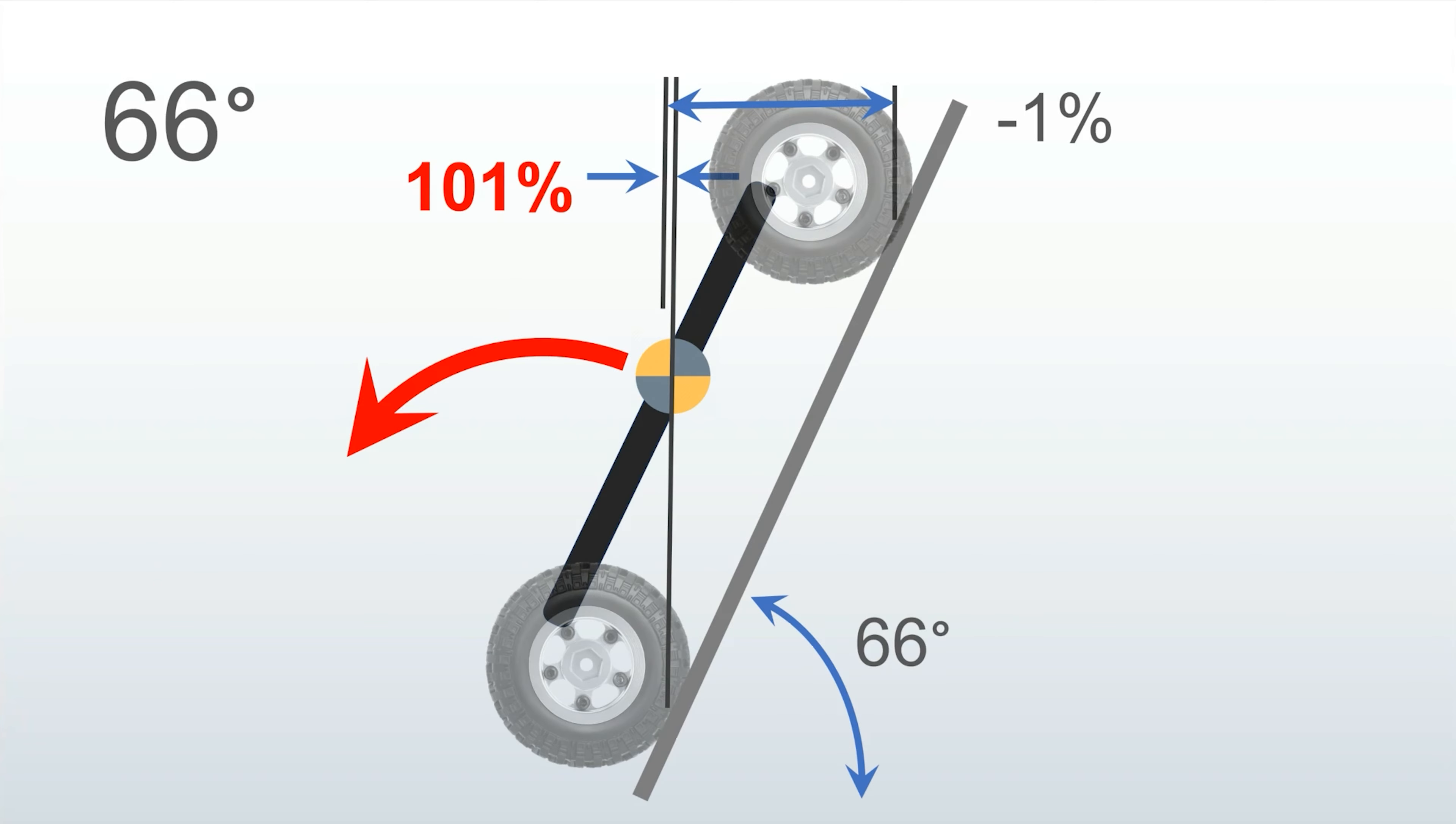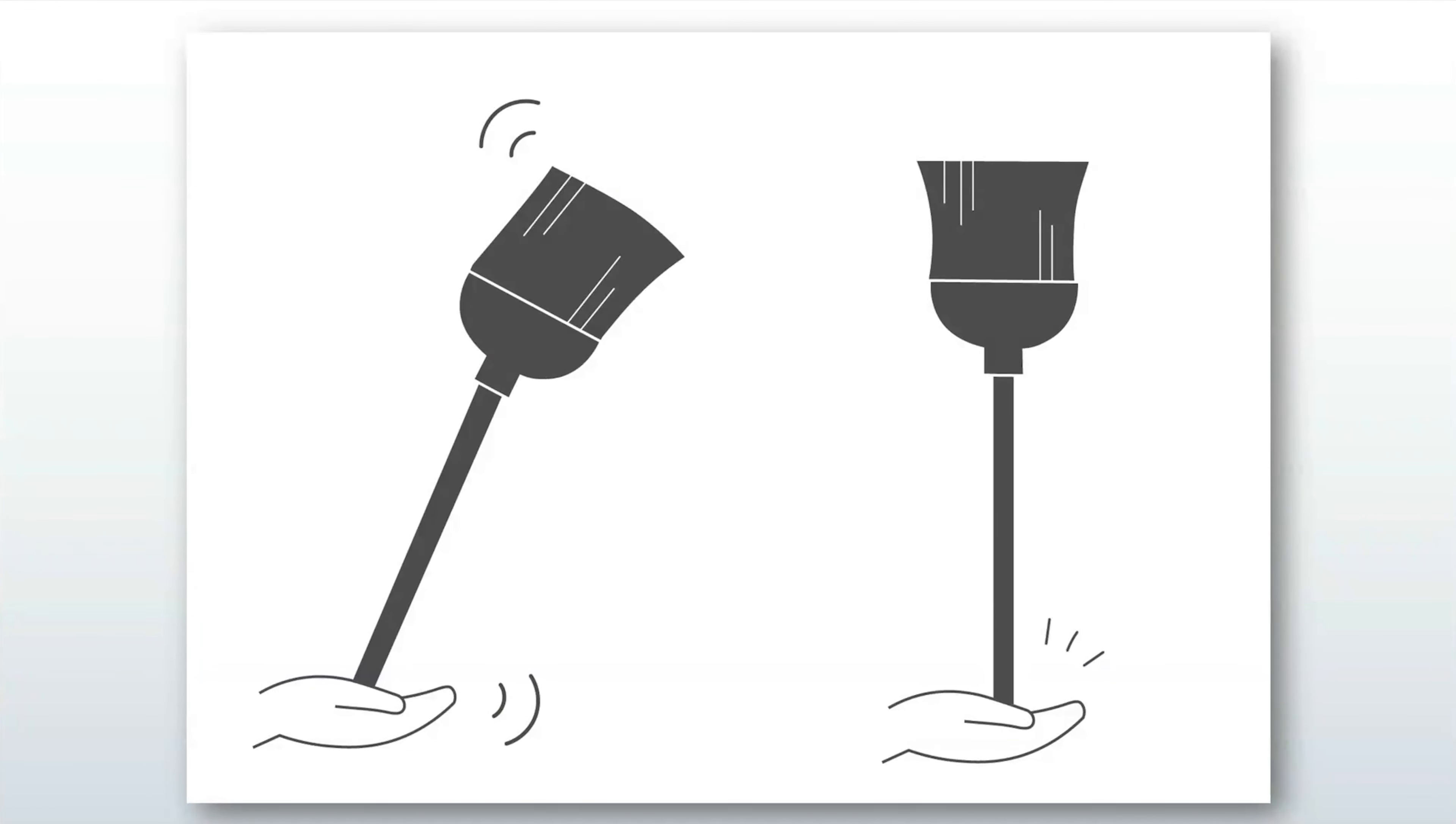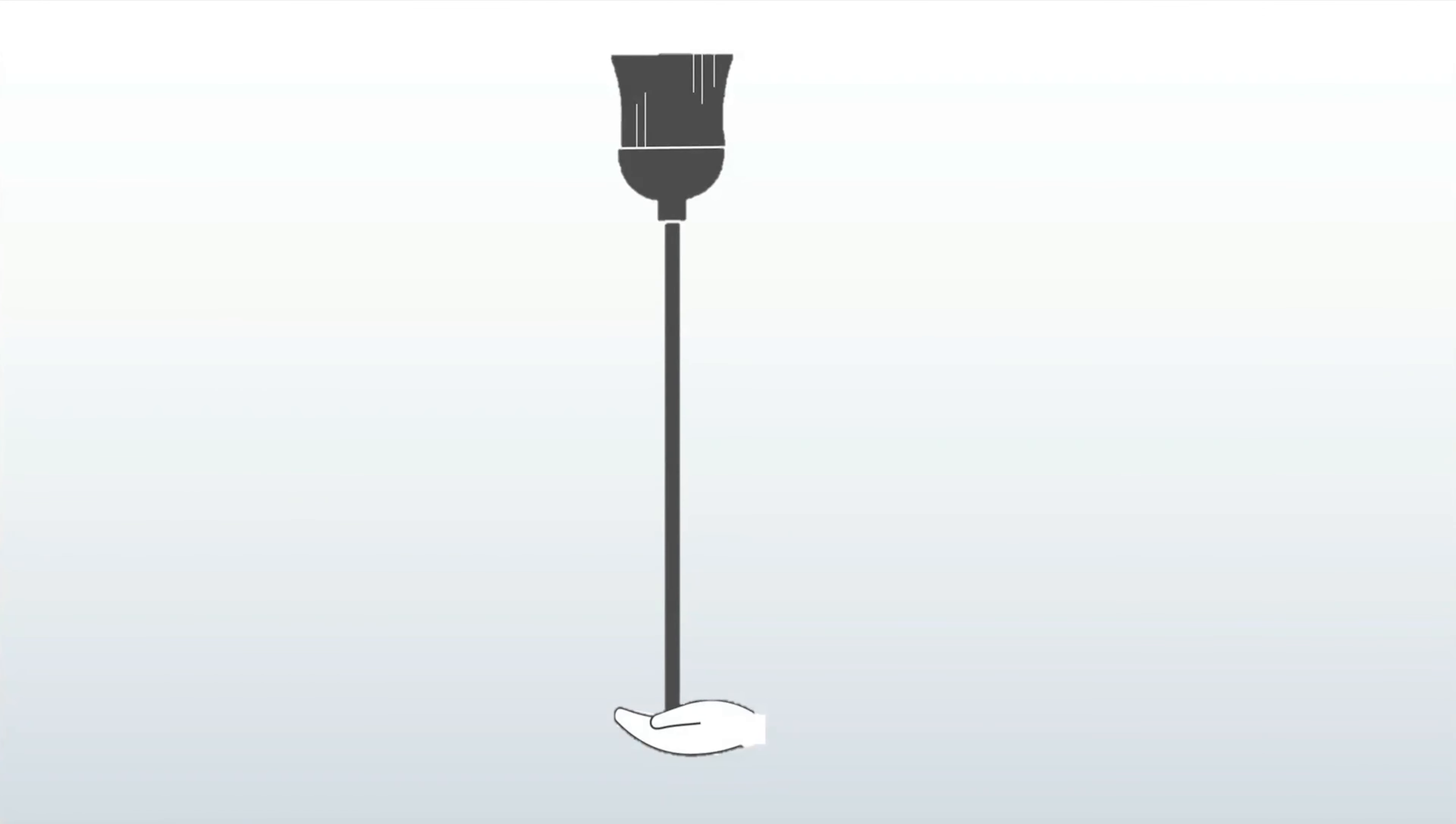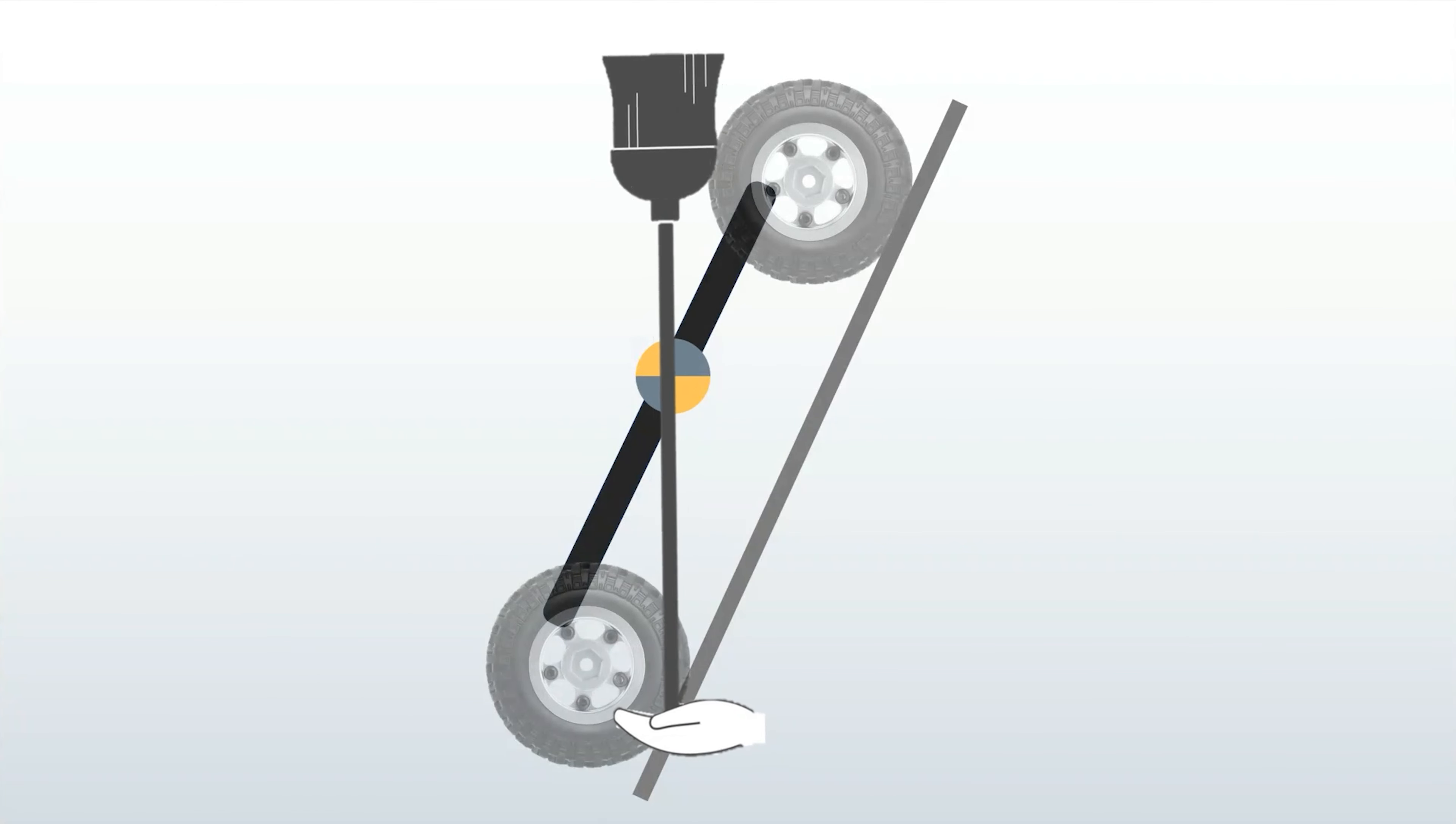If you go just one degree past that balance point, your rig will flip over and fall off the hill. Ever try to balance a broom on your hand? It's kind of the same thing with your car. It's balancing on the rear contact patch. Note that the rear contact patch is actually forward of the rear axle when you're on an incline.